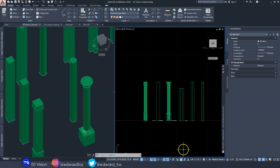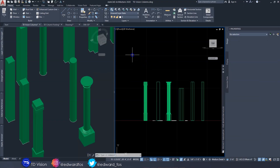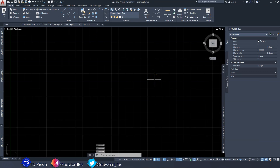The column footings we'll be looking at — I have them in an image right here. We have the simple pad footing, then we have this step footing, which I'll be showing you how to do, as well as the slope footing, and then we also have a circular cylindrical footing. These are the four I'll be focusing on, but if I show you how to do one, you'll be able to manipulate the tools to get the others.